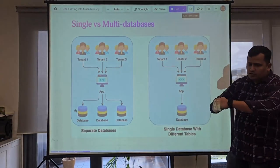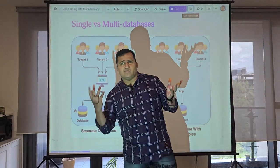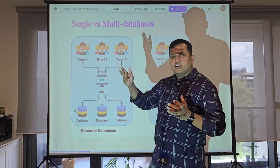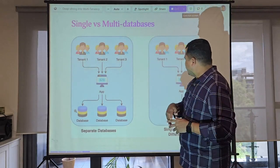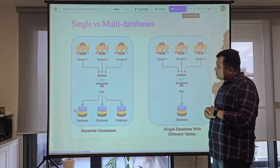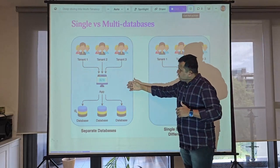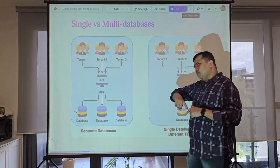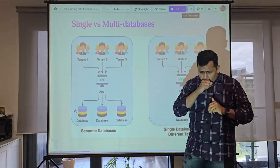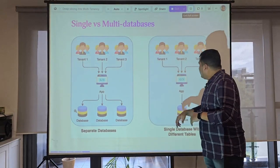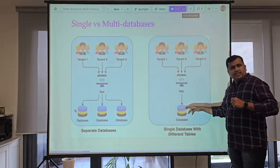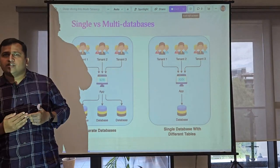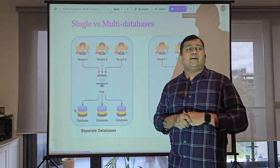Inside tenancy we have multiple approaches: single database, multi-database, multiple domains, or single domain. In a single database approach, you store a tenant ID in each table and use global scope to keep isolation. In multi-database tenancy, for each tenant we have a separate database. You also need one more central database for administration, which we'll cover next.